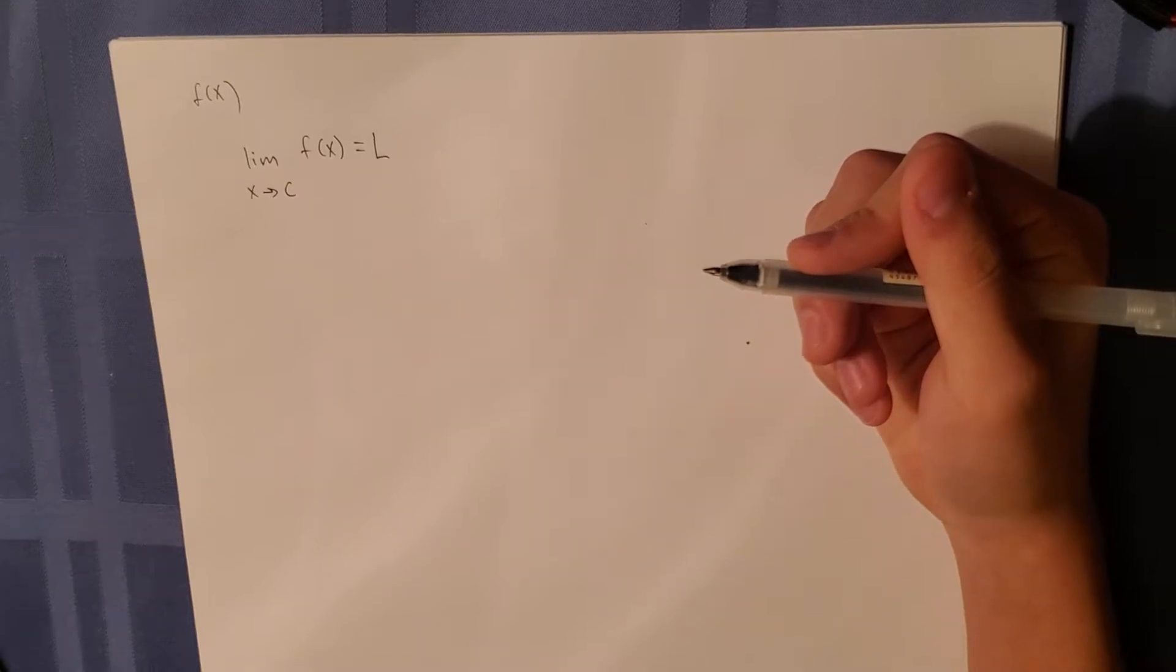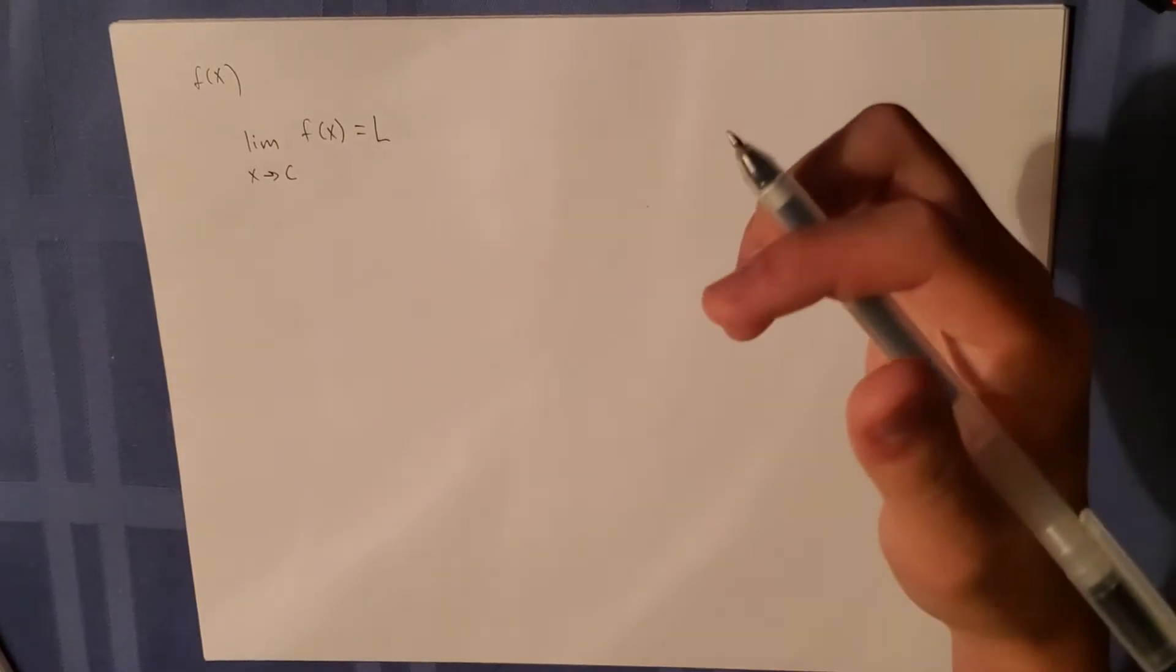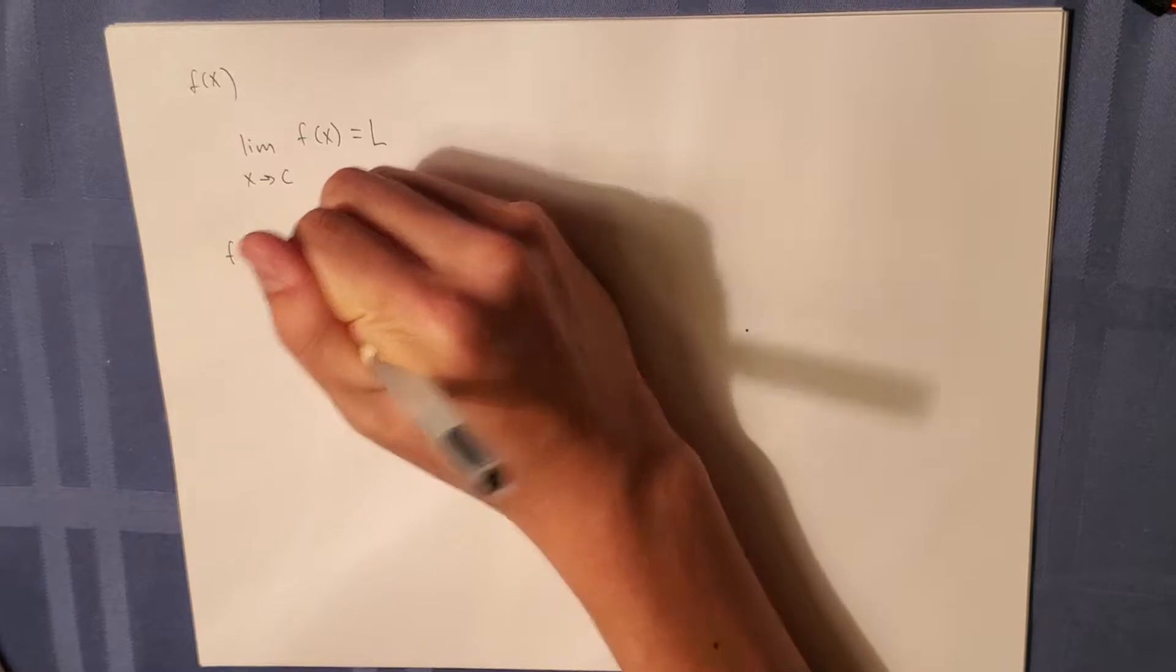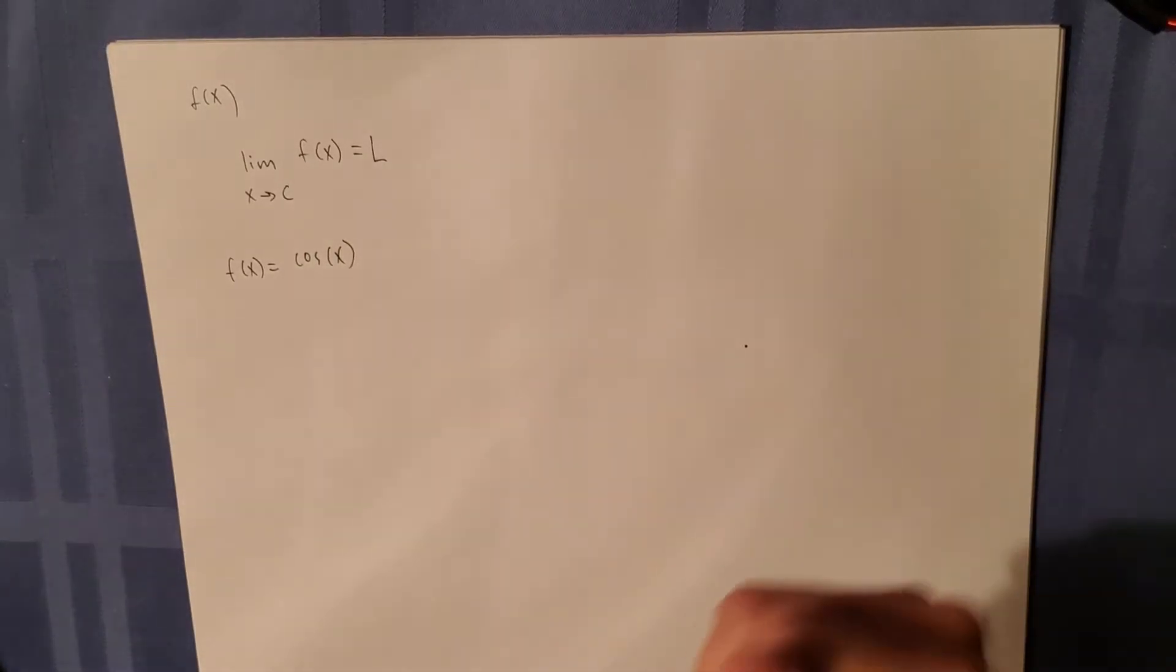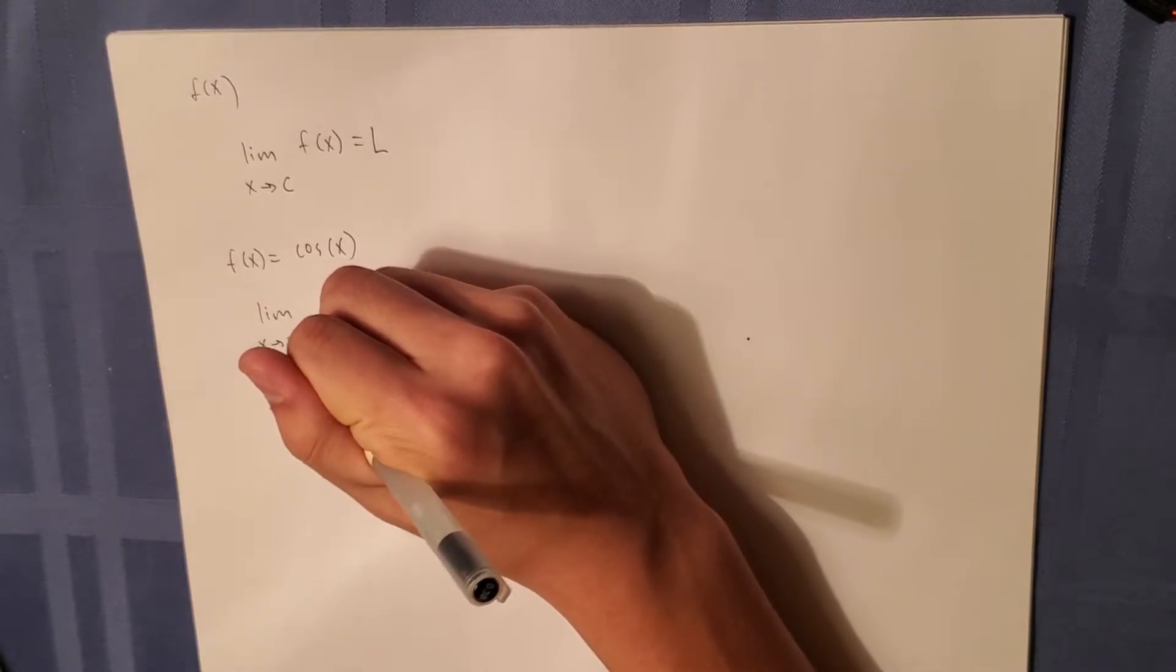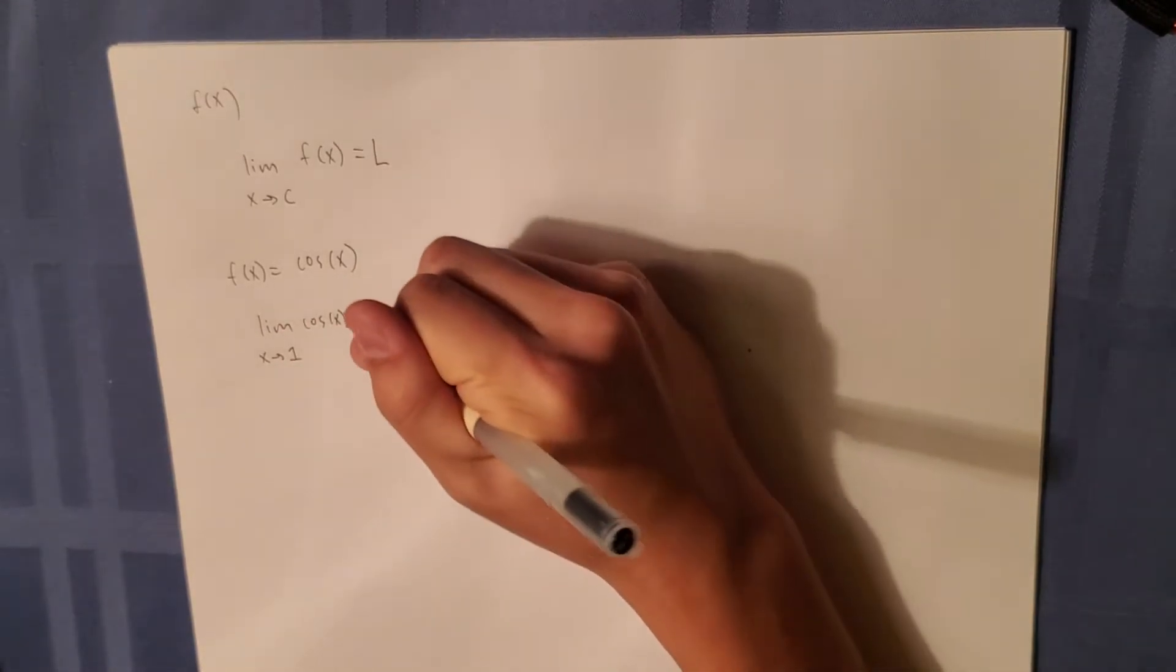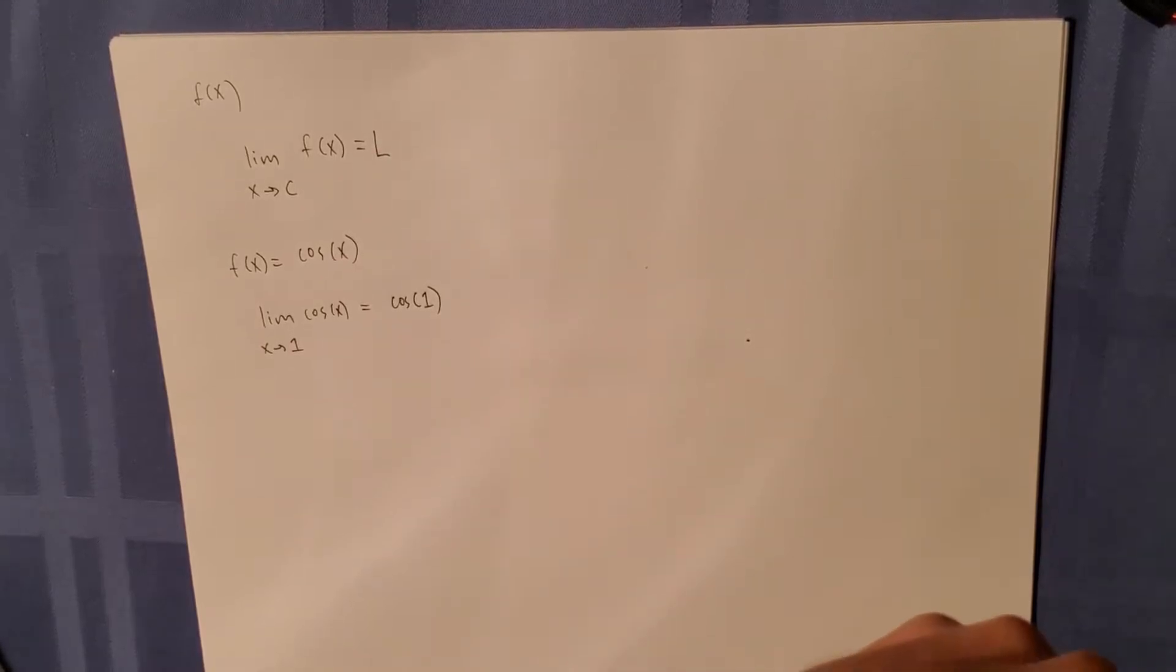So this means that in a certain limit, let's just say we have f of x equals cosine of x. The limit as x approaches 1 of cosine of x would equal cosine of 1. This is very intuitive here.